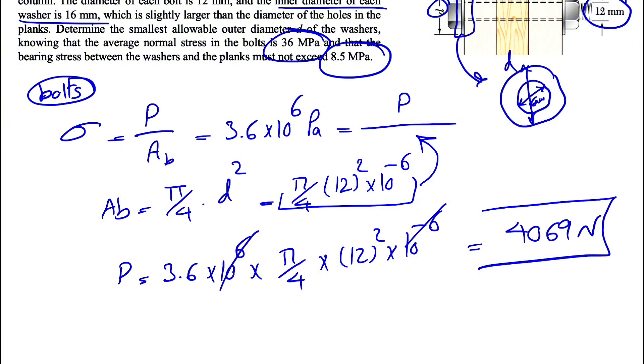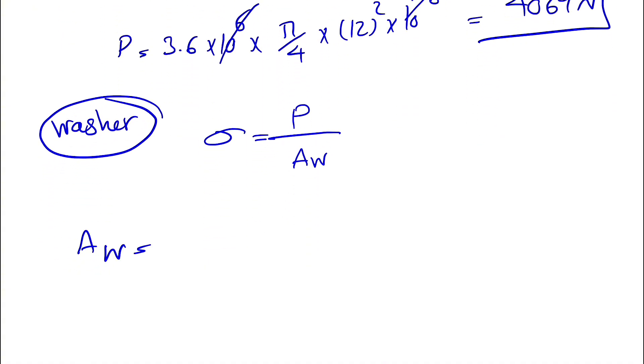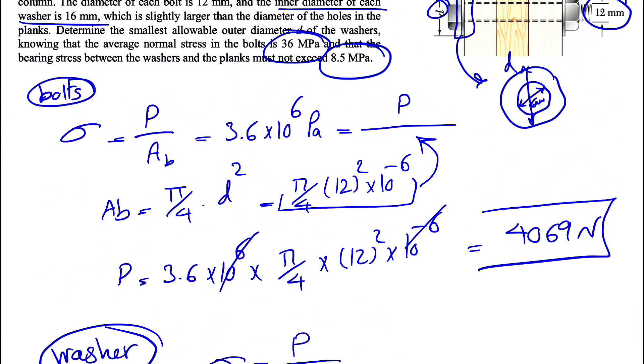Obviously we're going to have the same force in the washer too. So if we want to write the average normal stress in the washer, we have the same P equal to P over the area of the washer, which would be a bit different than what we have for the bolt since there is a hole inside of the washer. What we are looking at here is basically the diameter. If we want to find the cross section or the area of the washer, we have pi divided by 4 times the outer diameter squared minus the inner diameter squared.